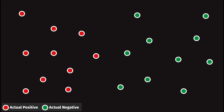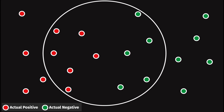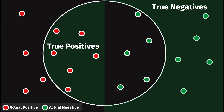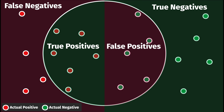Once we do have a model, it will make predictions. Here the model predicted the cases inside the circle as positive. Some predictions are correct, other predictions are incorrect. When the model correctly identifies a positive case, this classification is a true positive, or TP. Incorrect positive predictions are false positives, or FP.